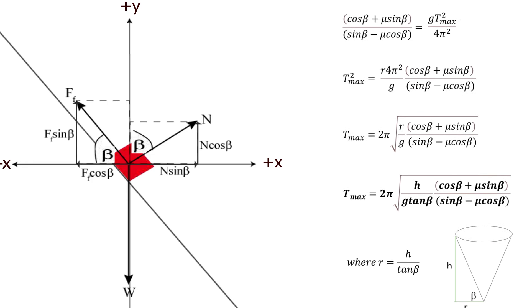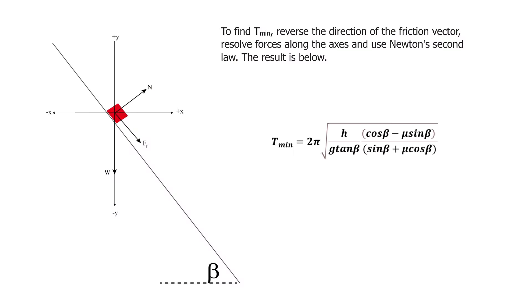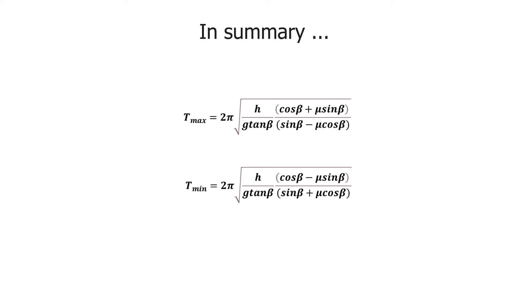Our maximum period is equal to 2 pi times the square root of h times (cos beta plus mu sin beta) all over g tan beta times (sin beta minus mu cos beta), where mu is the coefficient of friction between the block and the slope, beta is the angle the slope of the cone makes with the horizontal, and g is the gravitational field strength — 9.8 metres per second per second. To find T minimum, it's the exact same process, except we reverse the direction of the friction vector. When it's T minimum, the inclination of the block is to move up and out of the cone, so friction acts down the slope. The answer is the same formula, but with the positive and negative signs exchanged to give the minimum period.